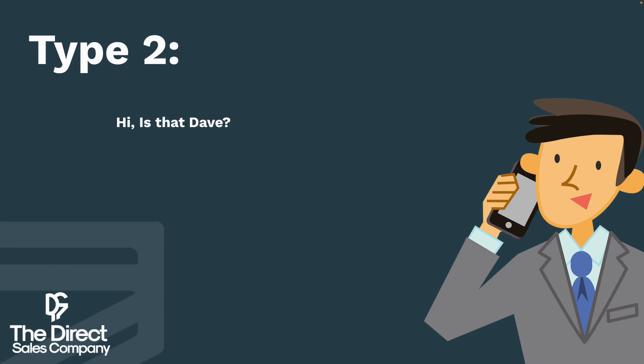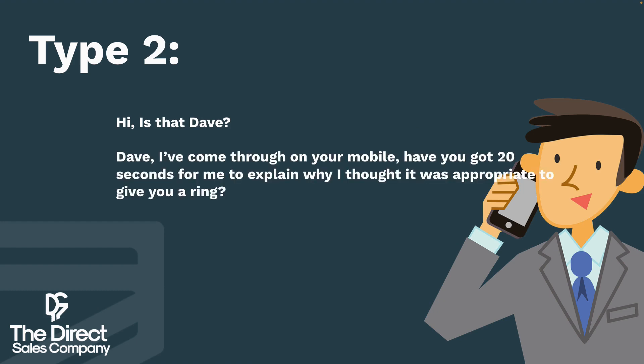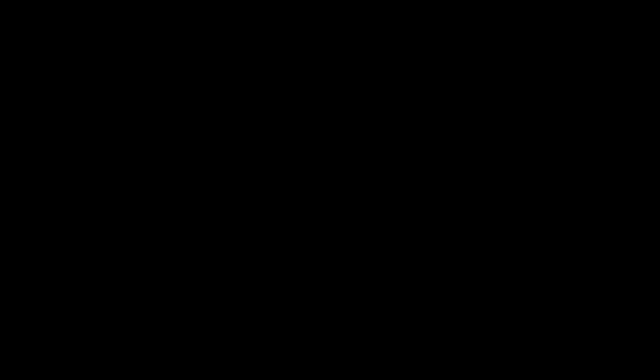Or type two: Hi, is that Dave? Dave, I've come through on your mobile. Have you got 20 seconds for me to explain why I thought it appropriate to give you a ring? The reason this works is that it's a pattern interrupt. You'll see different variations of it on LinkedIn or Twitter. Essentially you're putting the prospect in control and acting not like a cold caller. You can take this to extremes and go something along the lines of: 'Hi, is that Dave? Dave, I'm going to be up front with you. This is a cold call. Have you got 20 seconds for me to explain why I'm calling or do you want to hang up now?' The fact that you're showing you're detached from the outcome makes this really effective.